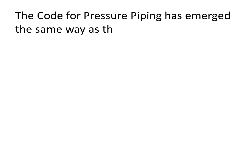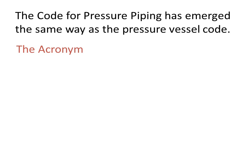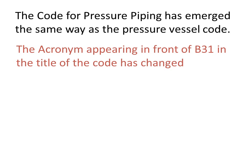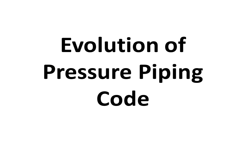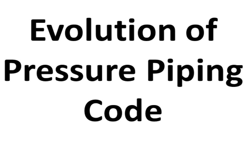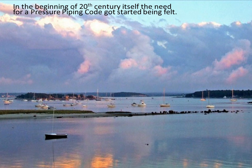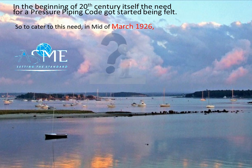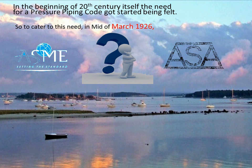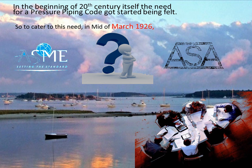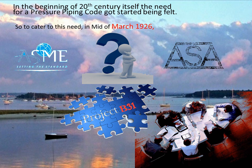The code for pressure piping has emerged the same way as the pressure vessel code. The acronym appearing in front of B31 in the title of the code has changed from ASA to ANSI to ASME. In the beginning of the 20th century, the need for the pressure piping code began to be felt. To cater to this need, in mid-March 1926, ASME, as the sole sponsor, requested the American Standard Association, ASA, and thus initiated project B31.